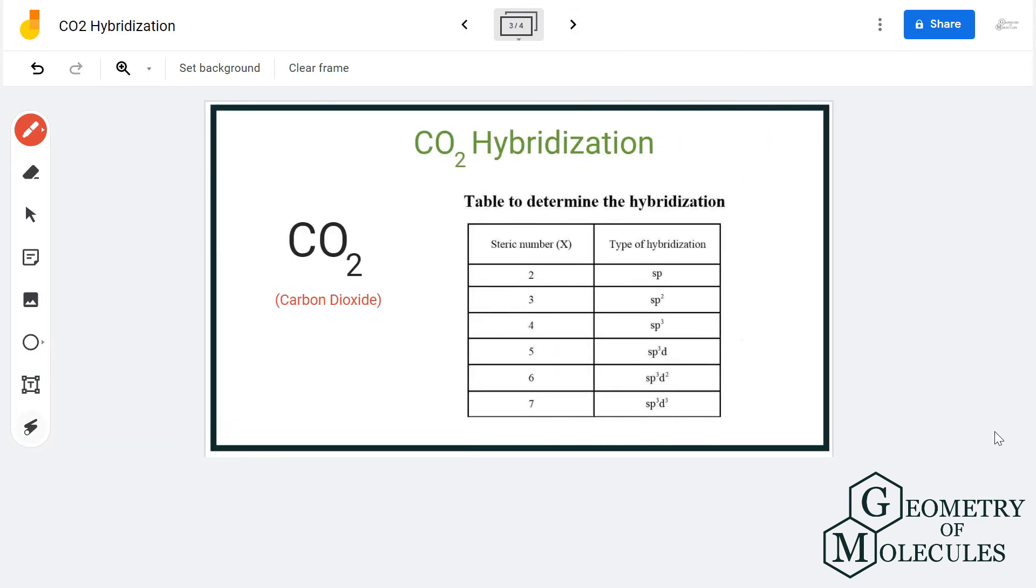And if you refer to this table, an atom having a steric number of two has sp hybridization. So carbon in CO2 has sp hybridization.